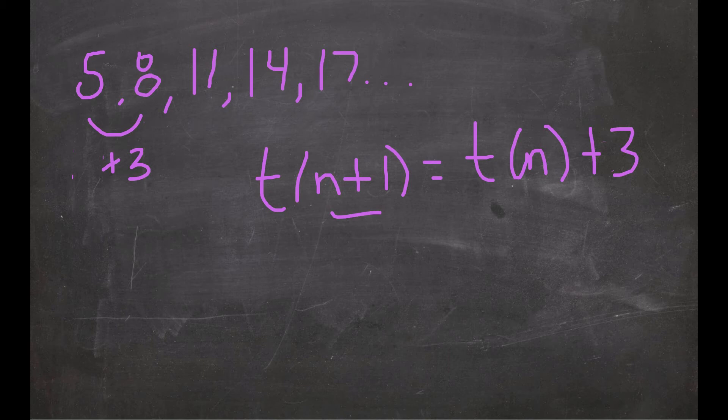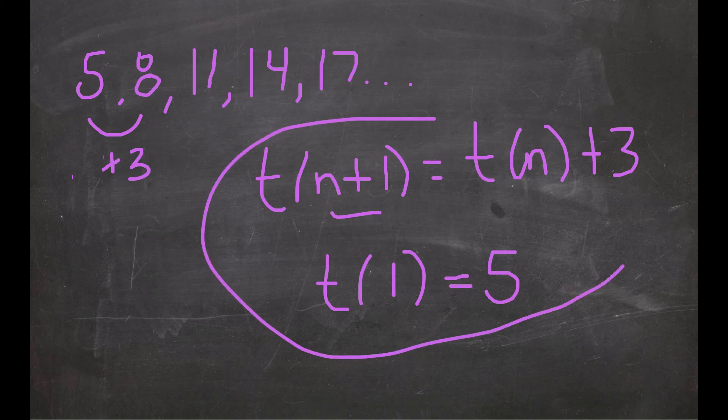Now, in order for your recursive equation to be complete, you need to have a starting point. Because you could end up generating an infinite number of sequences if all you know is that you have to add 3 to get to the next term. So to make this recursive equation complete, we need to add in that the first term in our sequence is 5. So together, these two pieces complete our recursive equation.